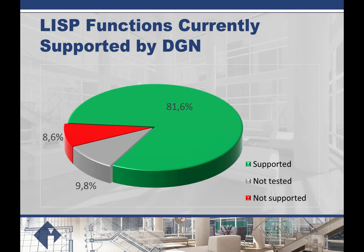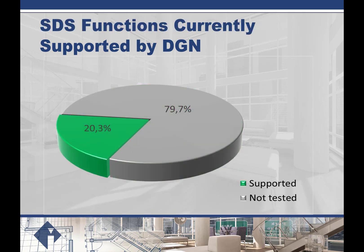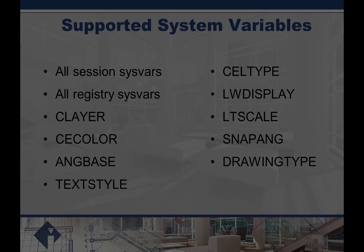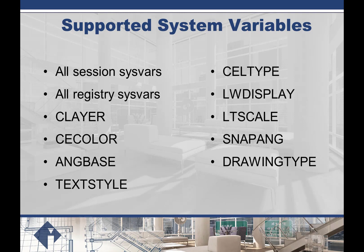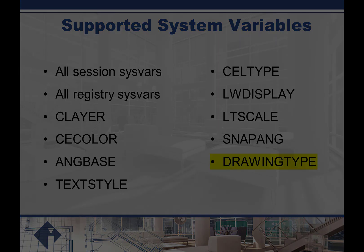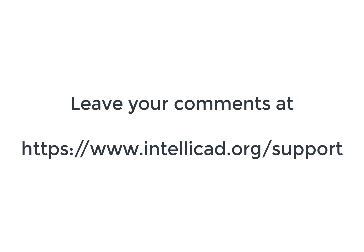The DGN editor supports script execution, about 80% of Lisp functions, and SDS is supported currently. Also, the DGN editor supports system variables. For example, the snapang system variable is the same as in DWG. It's stored in a database, so if you close and open the file, snapang saves its value and doesn't depend on DWG. For scripts that need to know whether a DGN or DWG file is active, the drawing type system variable has been implemented. That's all I have about the DGN editor for now.